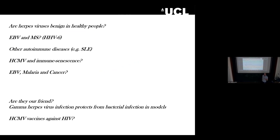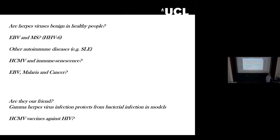An important thing emerging from the study of herpes viruses is that they're perhaps not quite as benign as we thought in healthy people. For some herpes viruses you're living with them for 60 to 70 years — chickenpox acquired as a child, CMV probably transmitted in childhood, Epstein-Barr virus for 60 to 70 years. We're now seeing reports that Epstein-Barr virus is associated with MS. We don't fully know the mechanism, but the immune response driven against Epstein-Barr virus and the hyperimmune response might be contributing to autoimmunity. There are also links between herpes viruses and hyperimmune responses in other autoimmune diseases.